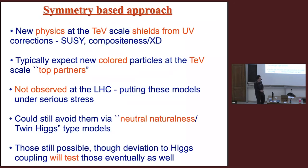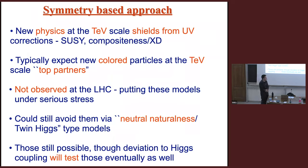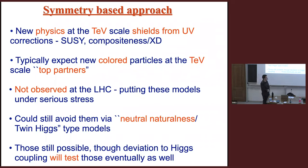There are still ways to tweak these models — for example, neutral naturalness or twin Higgs models can avoid some constraints. But these models are starting to become really complicated. They will give you deviations of the Higgs couplings even if neutral naturalness is hiding the top partners fairly effectively, so eventually those will also be tested.